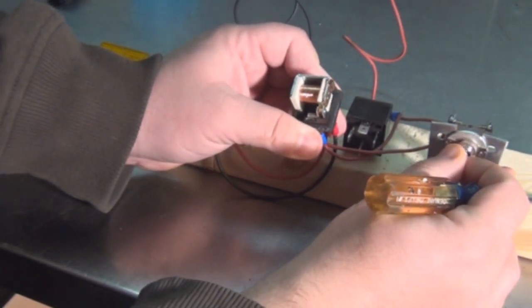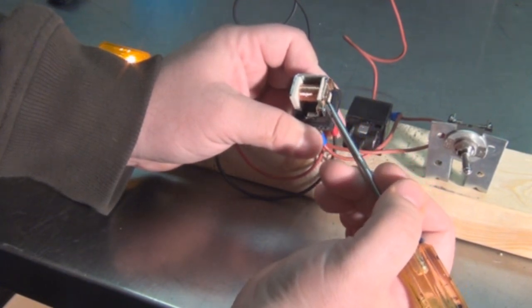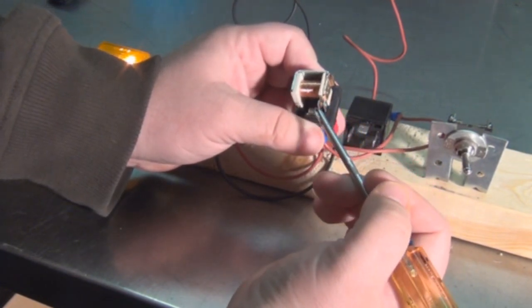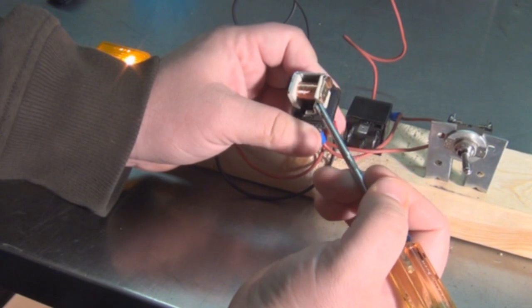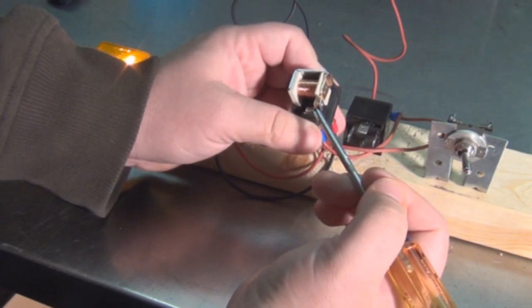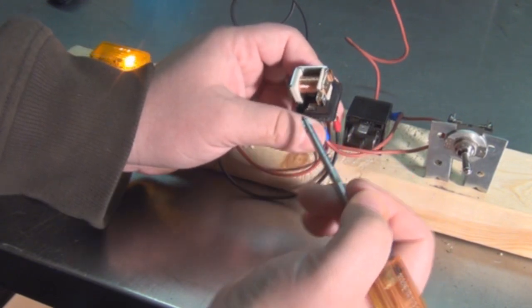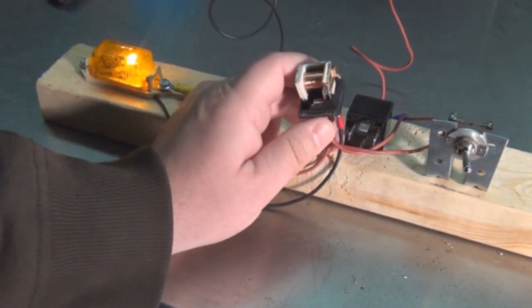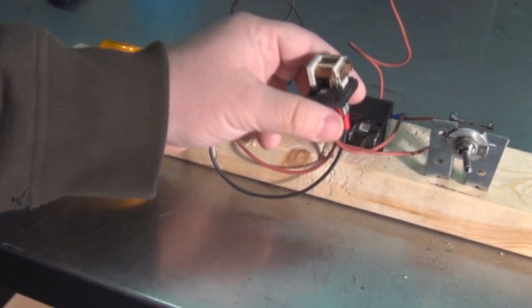The electricity will flow, or the current will flow through there to the spring loaded switch, make contact with this contact and complete the circuit, which enables your light or horn or whatever you have going on.